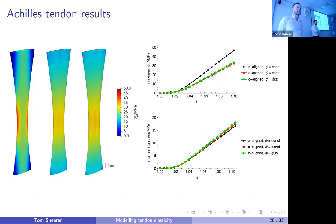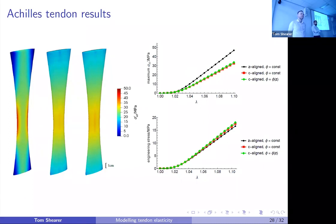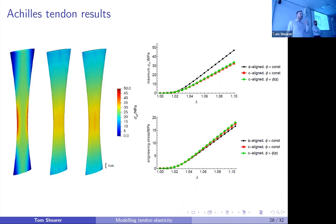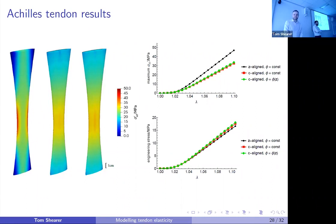Regarding the Achilles tendon graft used to replace the ACL: when taking the centre third of the Achilles tendon, it's possible that fibers which follow the contours of the overall tendon will end at the side boundaries of that graft. That could mean stress isn't being distributed as effectively in grafted tendons as in natural healthy tendons. Thank you.